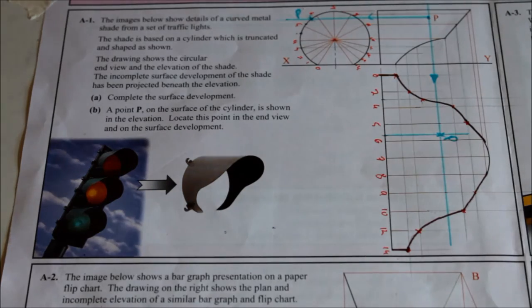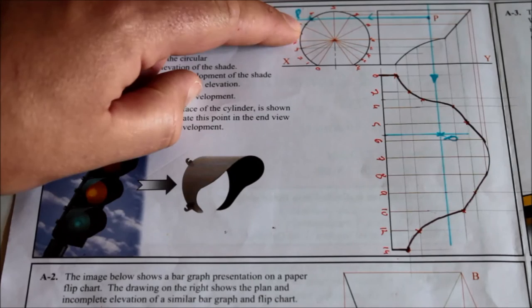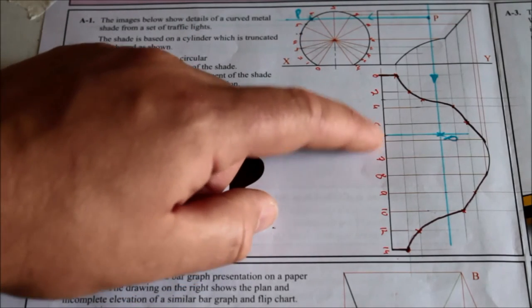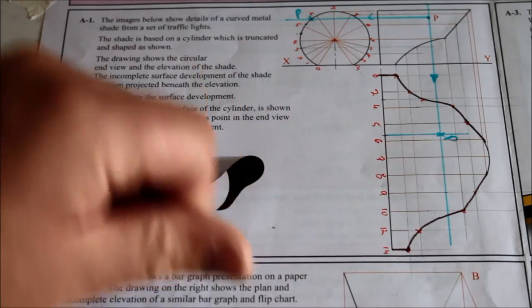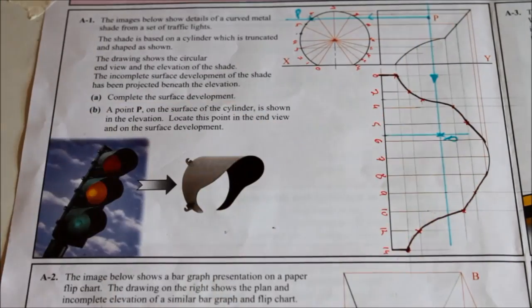That's point P then on the surface. Because it was on the edge here, you get the gap between it and point five or point six, whichever one you want, mark it in here on the same points in the plan. So distance from five to P, draw across, bring down from the elevation, and that's your point P.